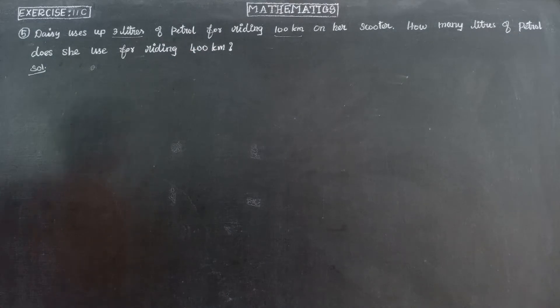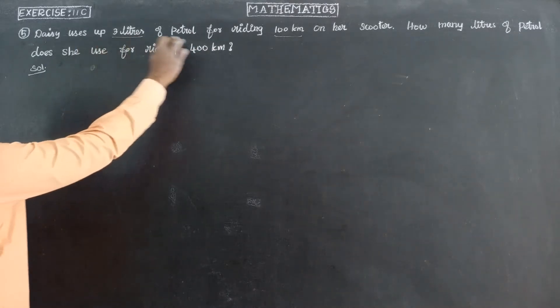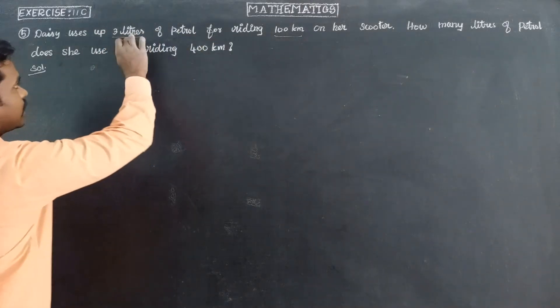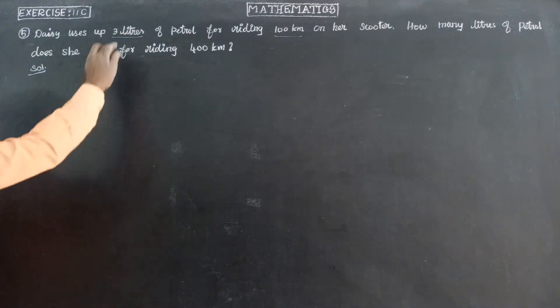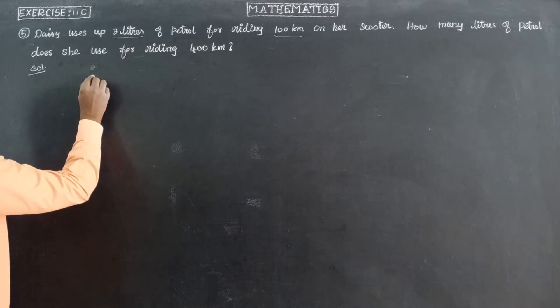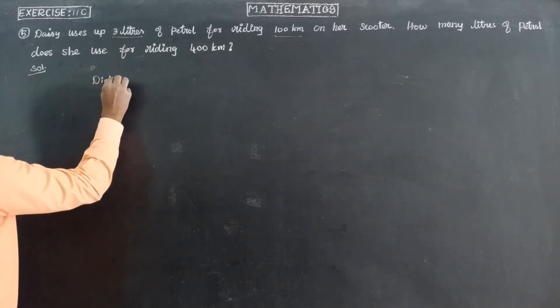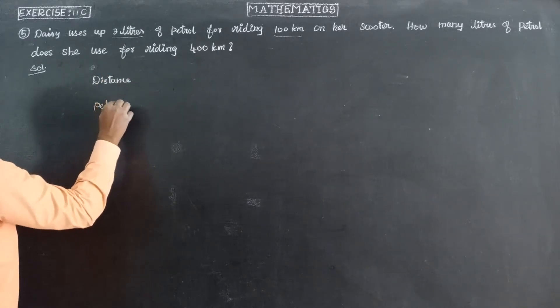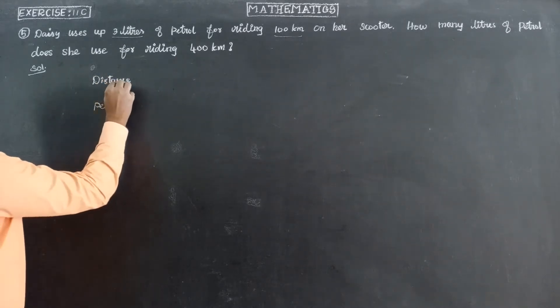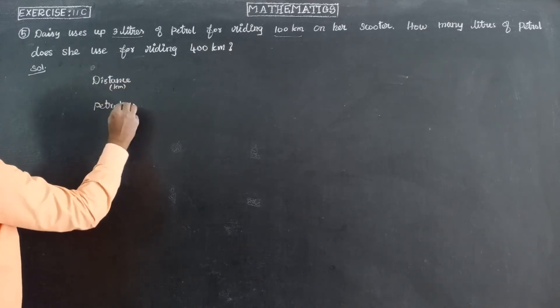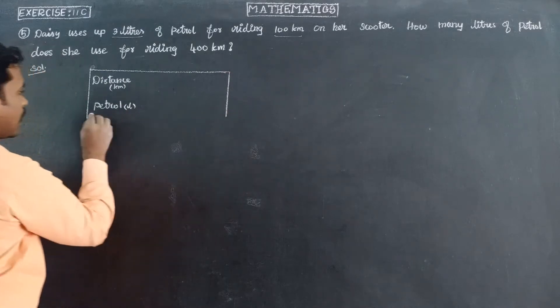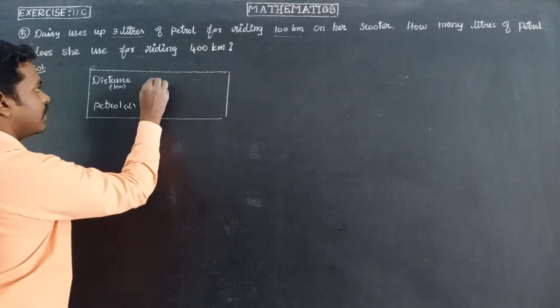This is the question. So first of all, distance of riding and litres of petrol are concerned together. Distance of riding 100 km is concerned with petrol consumption.